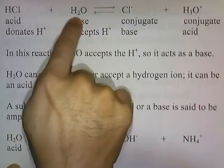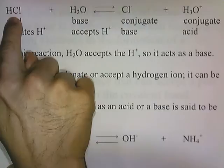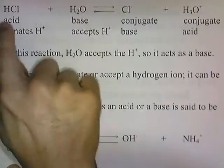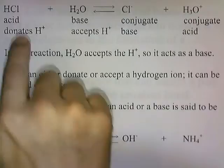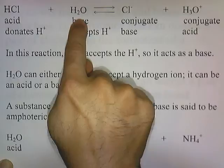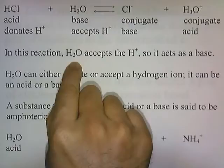Here's another reaction: HCl donates H+ to H2O. H2O accepts the H+, and after donating the H+, HCl becomes Cl-. After H2O accepts the H+, it becomes H3O+. Again, after an acid donates an H+, it turns into a conjugate base, and after the base accepts an H+, it becomes a conjugate acid.